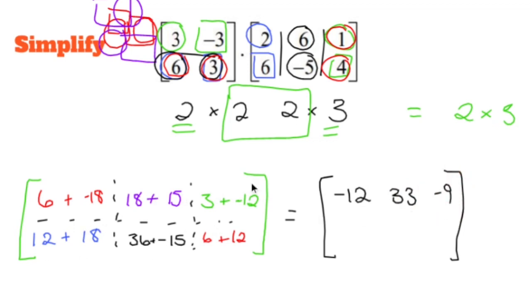12 plus 18 is 30. 36 minus 15 is 21. That was it. And 6 plus 12 is 18. So there you have it.